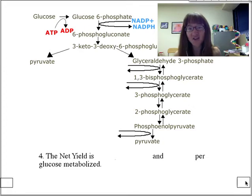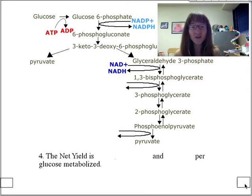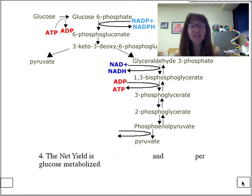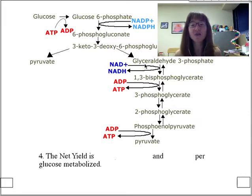As glyceraldehyde-3-phosphate is oxidized — just as in glycolysis — this gives off NADH, so one molecule of NADH is formed. In the next step, one molecule of ATP is produced via substrate-level phosphorylation. Then when phosphoenolpyruvate is converted into pyruvate, we get the last production of ATP. One ATP was consumed at the start, so we netting zero at first, but by the last step there is a net of one ATP.